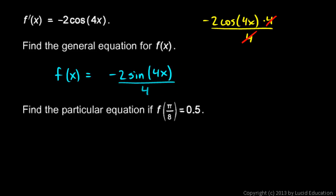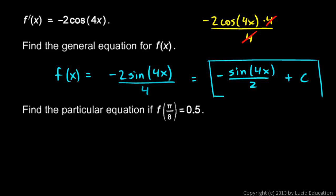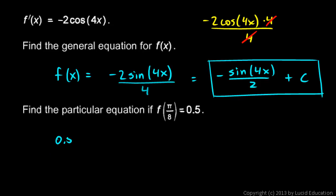Now if I take the derivative of that, I get what I want. Simplifying the 2 and the 4, f of x equals negative sine 4x over 2, or equivalently negative 1 half sine 4x. We need the plus c, so that's the general equation for f of x. Then we're told to find the particular equation if f of pi over 8 equals 0.5. Let's plug that in — the value of the function will be 0.5.